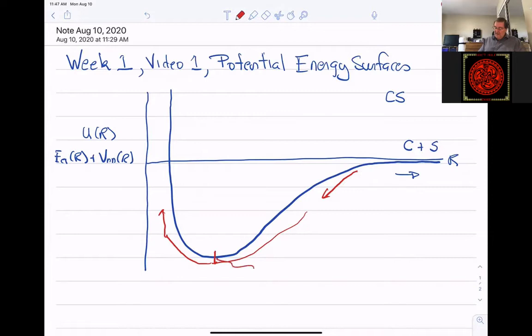This minimum energy point is given the symbol R sub E, or sometimes R eq, and that is the equilibrium bond length for the molecule. It's the place where if there really were a classical system, and if there were friction, then the atoms would come together, come together, and eventually they lose all of their potential energy to friction, and they'd sit right there.